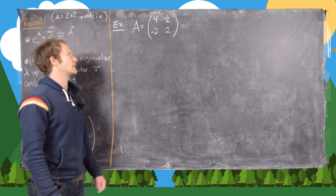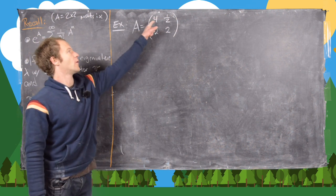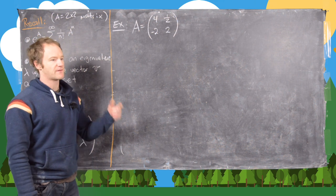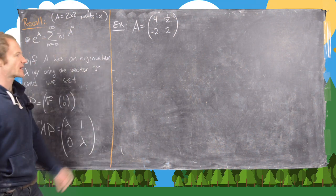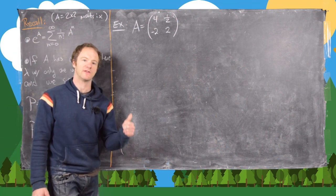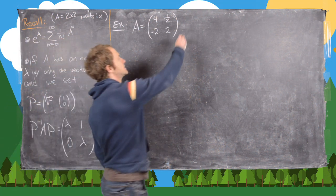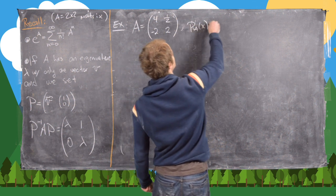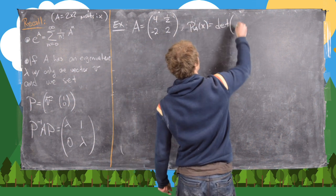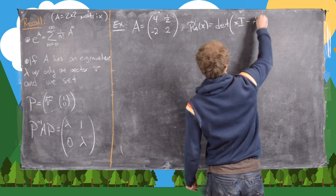Now here we're going to look at the following matrix. So we have A as [4, 1/2; -2, 2]. So we want to find the eigenvalues and the eigenvectors. And since we're looking at this special case, there'll be a single eigenvalue and there'll be a single eigenvector. So first we want to know what the characteristic polynomial is.